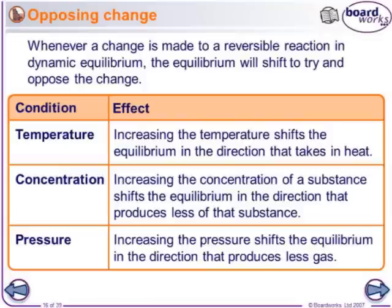Concentration is how many particles of a substance you have in that container. If you increase the concentration, then the equilibrium needs to counteract that change — it needs to oppose and go against it. So if you increase the concentration of something on one side of the reaction, then the equilibrium will shift in the direction that produces less of that substance to oppose the change.